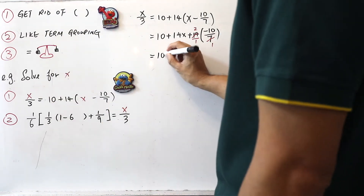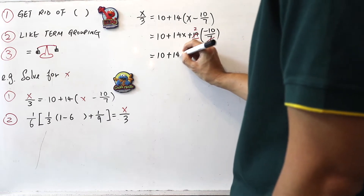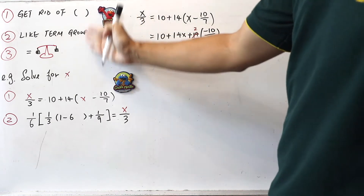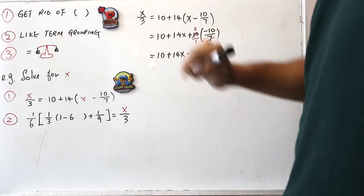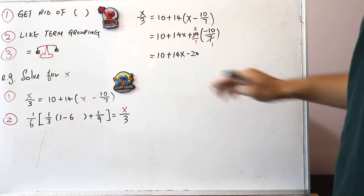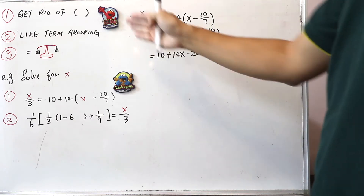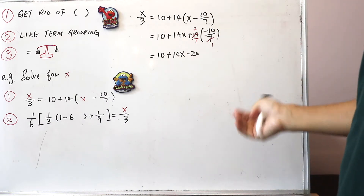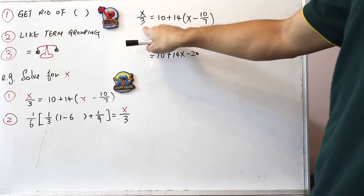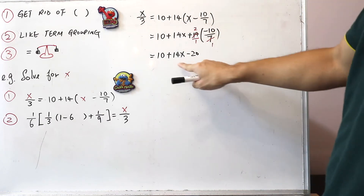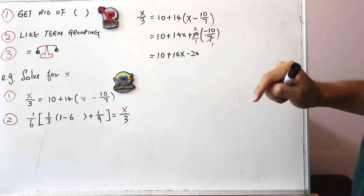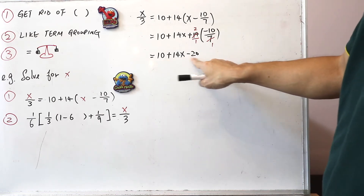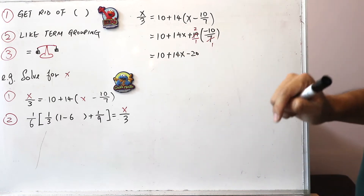So now we have 10 plus 14x minus 20. We check highlight one — no more brackets, so we move to highlight two: like-term grouping. We have x-related terms: x over 3 and 14x. We also have constants: 10 and minus 20. These are the like terms. We want to group the constants together and the unknowns together.